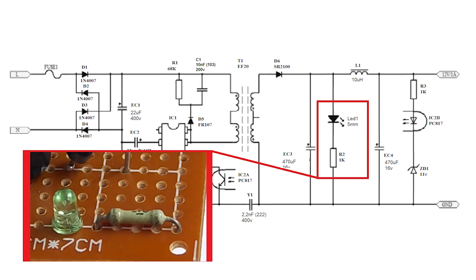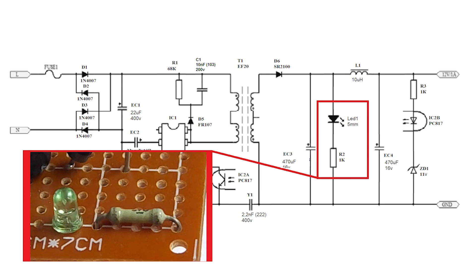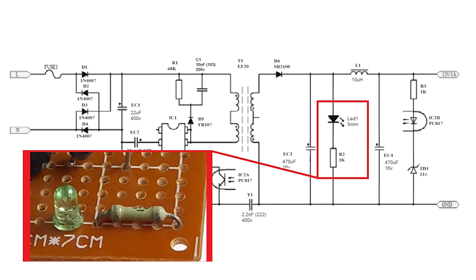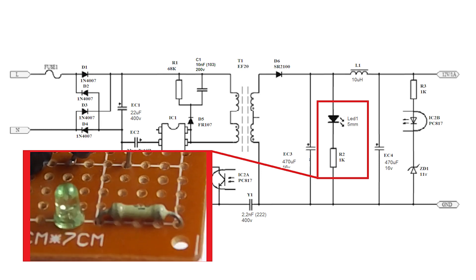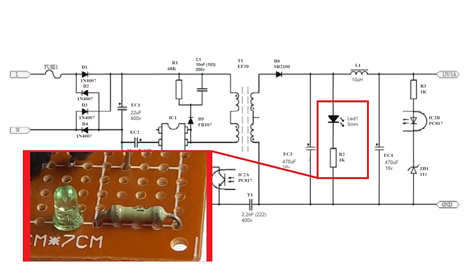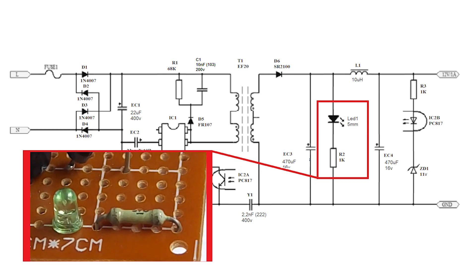The LED signaling that the power supply is working, you can put any. At least 3mm, at least 5mm. And in order for it not to burn out from a large voltage, there is a 1kΩ resistor R2 in series with it.